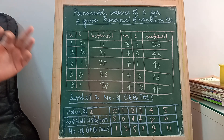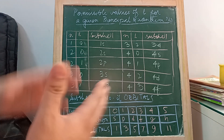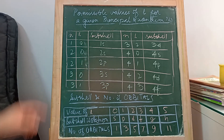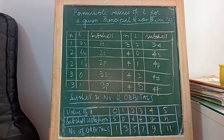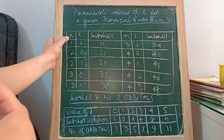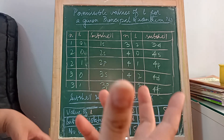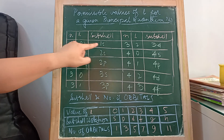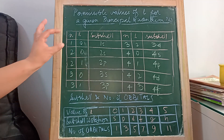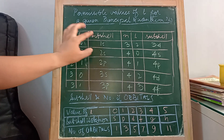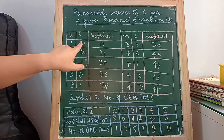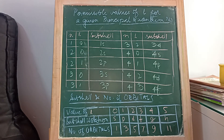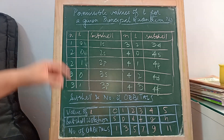The principal quantum number denotes the shells: 1 means the first shell, 2 means the second shell, 3 means the third shell, and 4 means the fourth shell — K, L, M, and N shells. For N equal to 1, the only value of L is 0, and the combination of N and L denotes a subshell. So 1s is a subshell, which is called the sharp shell in the first shell, the K shell. L equal to 0 means the shape is s.